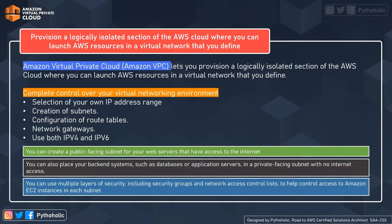You get complete control over your virtual networking environment, right from the selection of your own IP address range, creating your own CIDR blocks, creating your subnets, configuring route tables as per your requirements, and configuring your own network gateways. You can also make use of both IPv4 and IPv6 IP configurations. You can create public-facing subnets for your web servers that have access to the internet by configuring an internet gateway, and provide restrictions to your customers using customer gateways and VPC-only subnets.